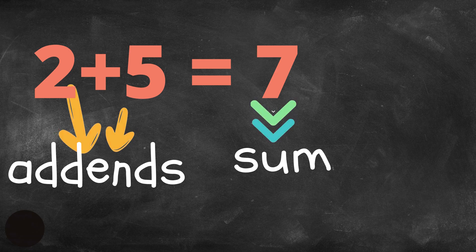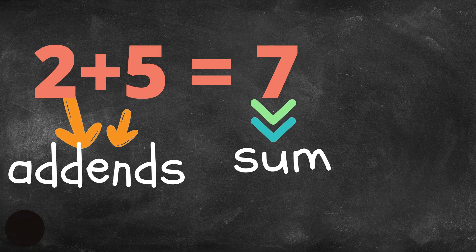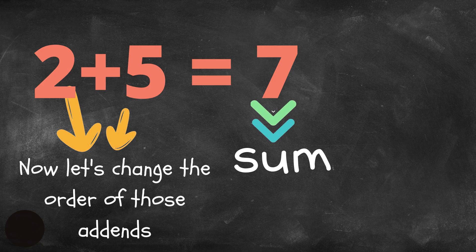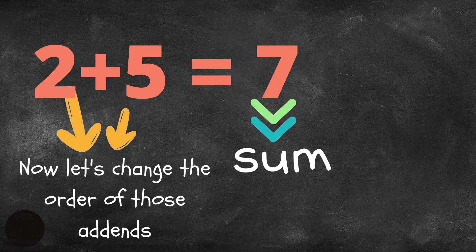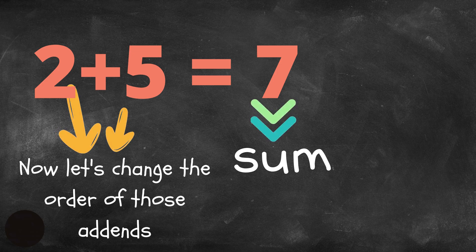So when we put the two addends together, 2 and 5, we get a total of 7. But what happens if we decide to change that order? Instead of the 2 coming first before the 5, what if we switch them? Let's change the addends and see what happens.